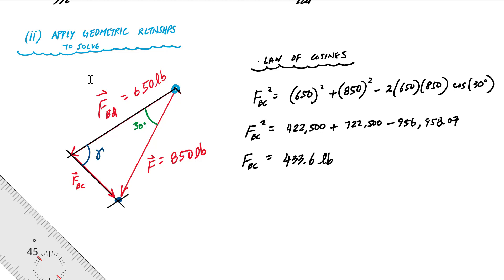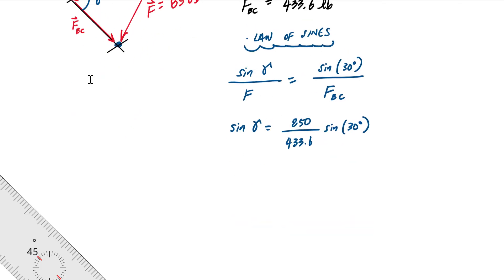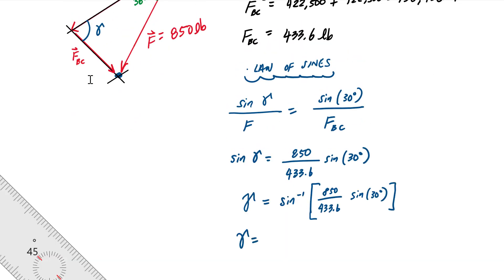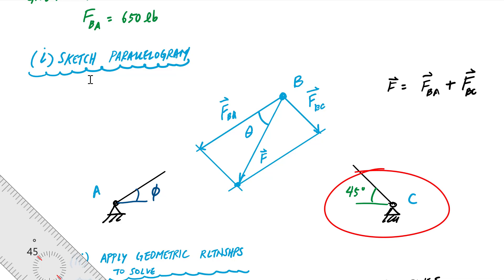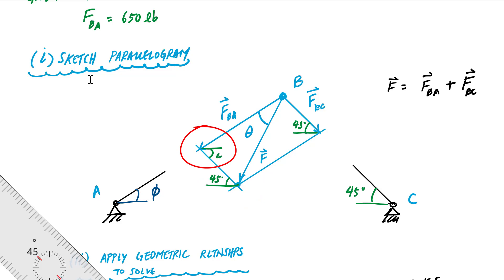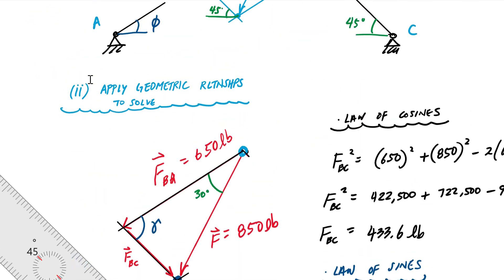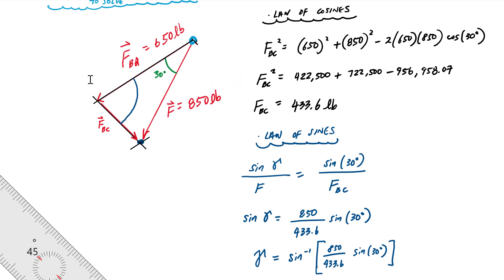To find the angle associated with F_BC, I call this angle gamma. From the law of sines: sin(gamma)/F = sin(30°)/F_BC. Using this relationship, gamma equals 78.54 degrees. Looking at the geometry, F_BC makes a 45-degree angle relative to the horizontal, and because of parallel lines that 45-degree relationship carries through the diagram.